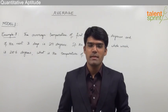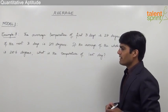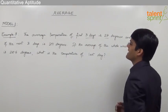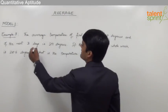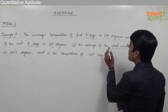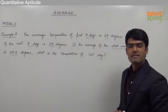Let us now discuss one more example based on the basic idea of average. The question here is: average temperature of first three days is 27 degrees and next three days is 29 degrees. If the average of the whole week is 28.5 degrees, what is the temperature of the last day?